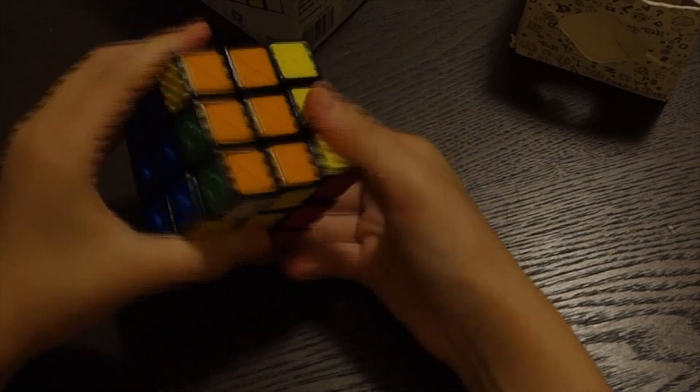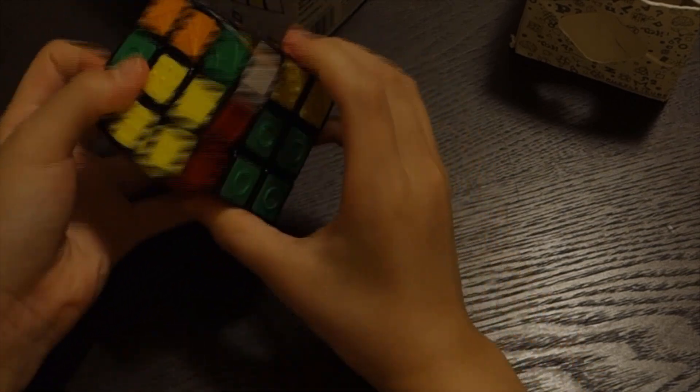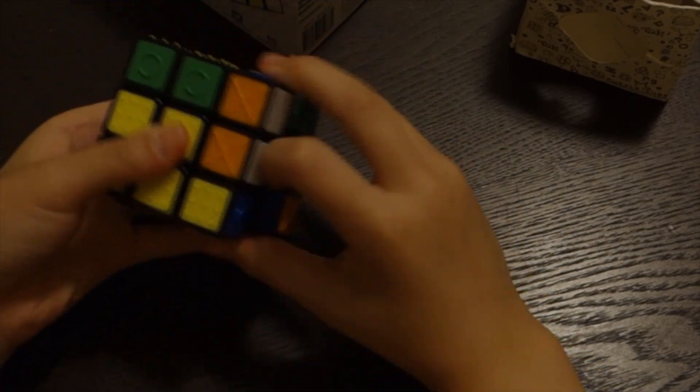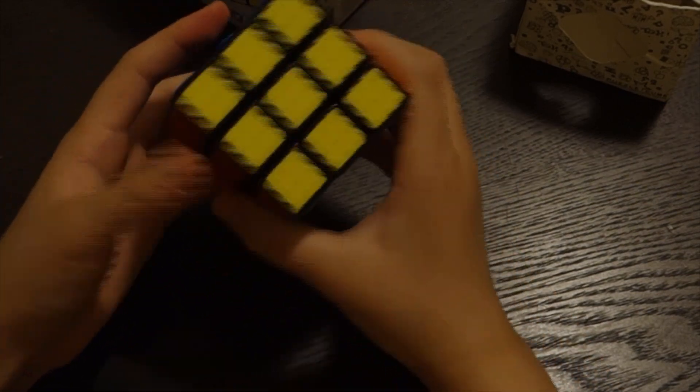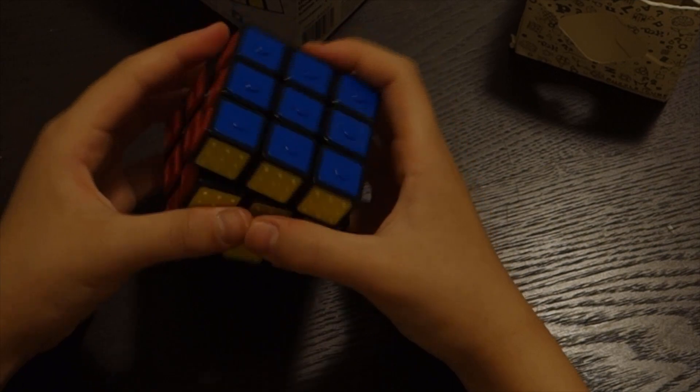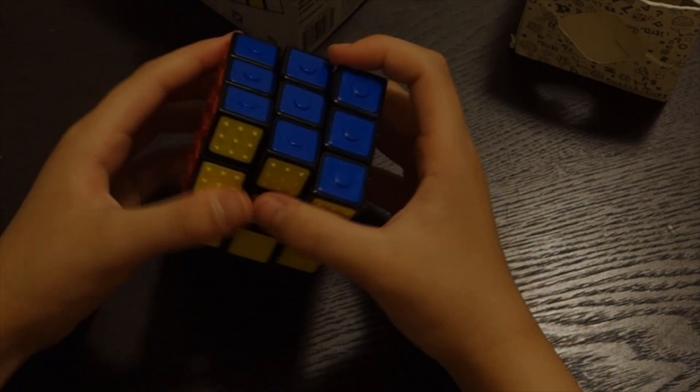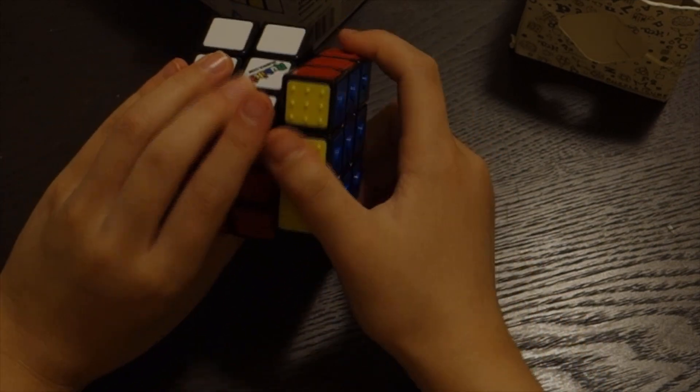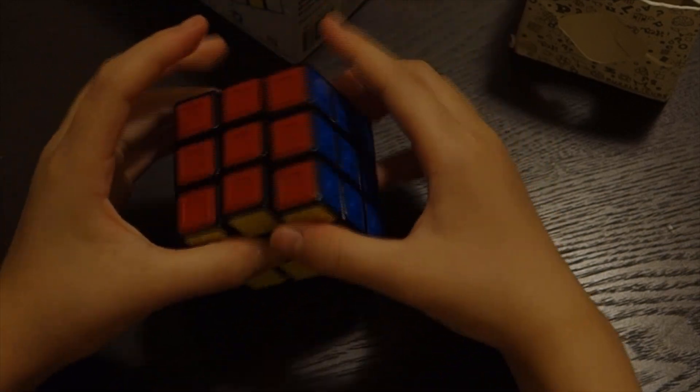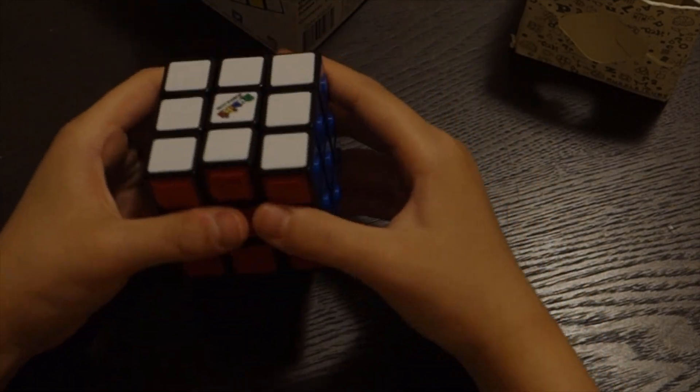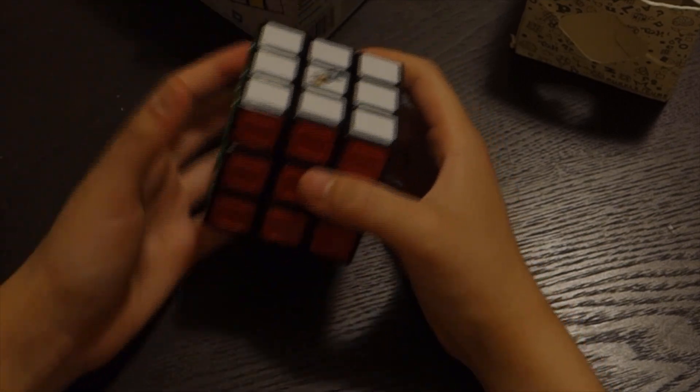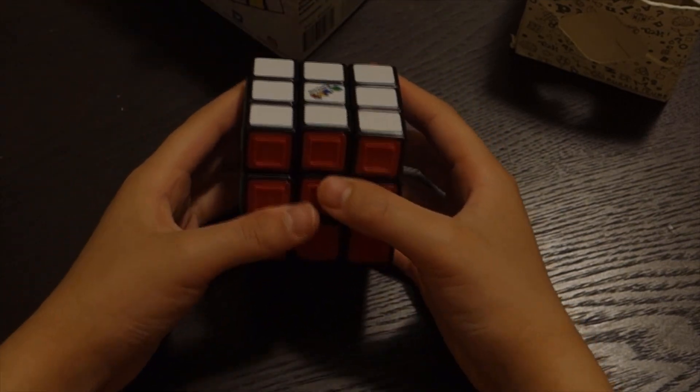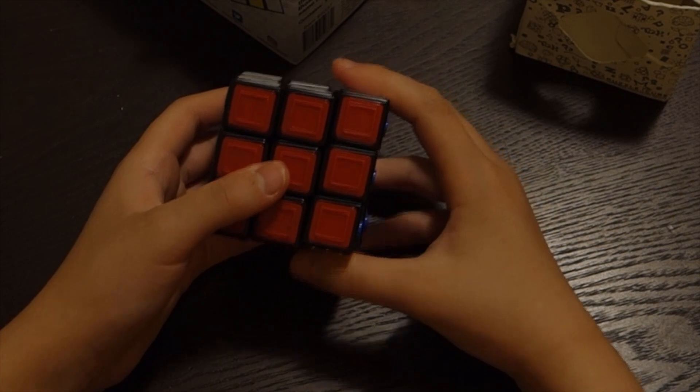Honestly, I'm not gonna lie, the turning is worse than a normal Rubik's cube. I don't see why that would actually occur because I don't think exactly that the layers are heavier because of these textures. Maybe it's just not lubed as well or something, but for some reason this is not quite as good turning as my other Rubik's brands.